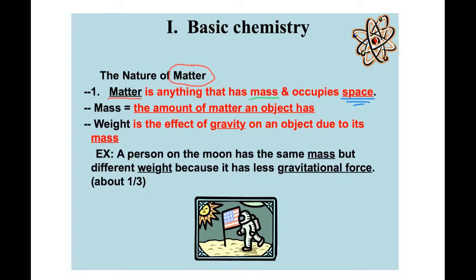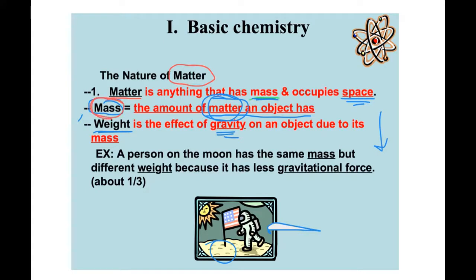What is mass? Mass is kind of like weight; it's the amount of matter an object has. Now, here on Earth, weight and mass are the same. But remember, if you ever are an astronaut and go to the moon, your mass will not change — you'll have the same amount of matter in your body. However, your weight will change. Your weight will go way down because weight is the effect of gravity on an object, and since the moon has less gravity than the Earth, you will weigh less on the moon but still have the same mass.